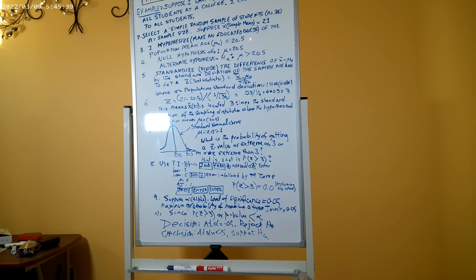So my null hypothesis, or my status quo, is H sub 0: mu equal to 20.5. My alternate hypothesis H sub a is: mu greater than 20.5.